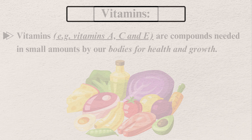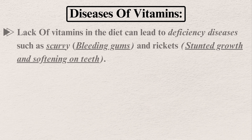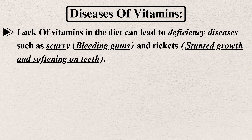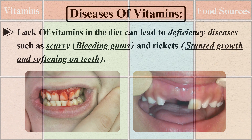A lack of vitamins in the diet can lead to deficiency diseases such as scurvy, which causes bleeding gums, and rickets, which causes stunted growth, softening of bones, and weakened teeth.